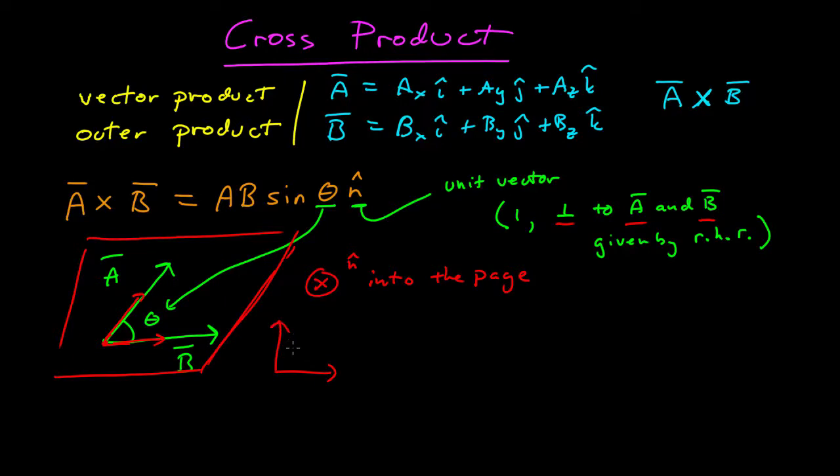If we have a right-handed coordinate system, say plus x, plus y, plus z, that would mean n-hat in this example would be in the negative k-axis. And then the magnitude is the magnitude of A times B times sine of the angle between them.